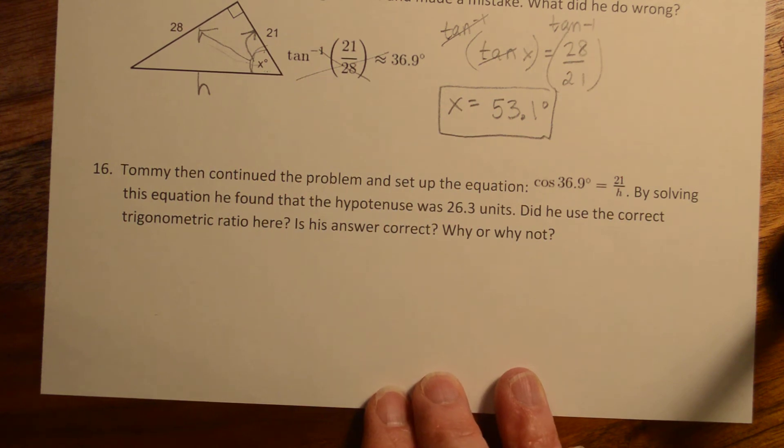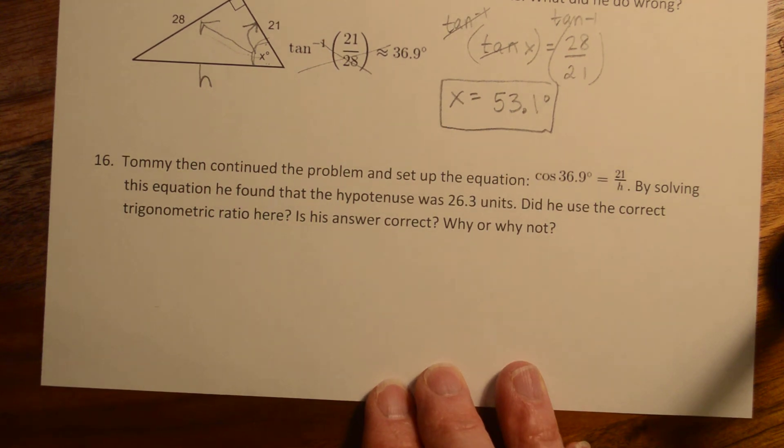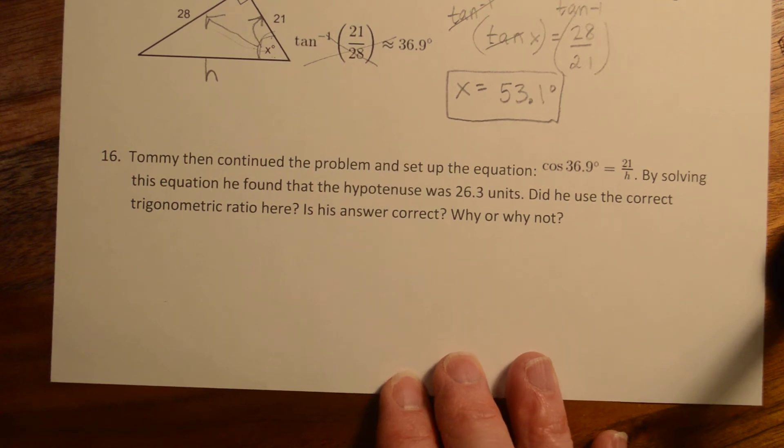By solving this equation, he found that the hypotenuse was 26.3 units. Did he use the correct trigonometric ratio here? Is his answer correct? Why or why not?